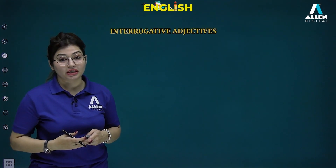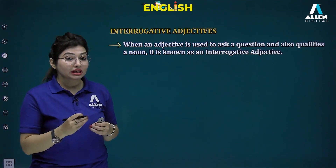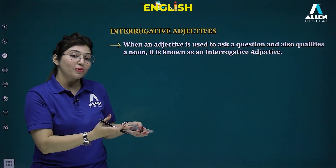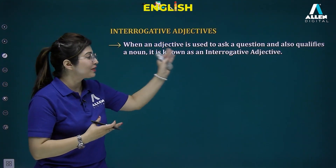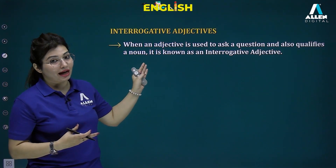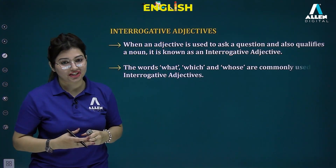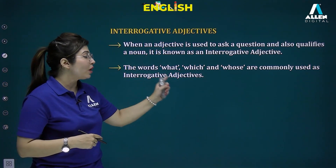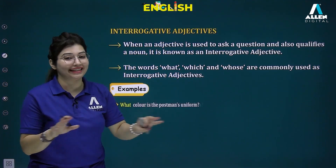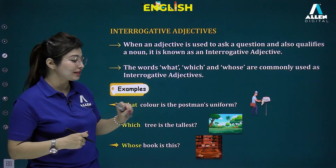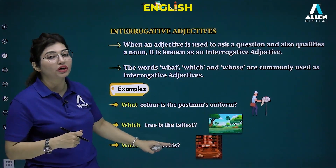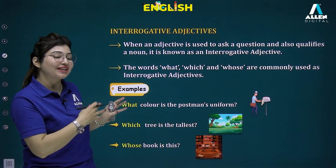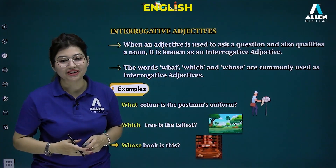Interrogative adjectives ask a question and also qualify a noun. There are three wh-words used as interrogative adjectives: what, which, and whose. Examples: 'what color is the postman's uniform?', 'which tree is the tallest?', 'whose book is this?' You can see both attributive and predicative uses of interrogative adjectives in these examples.